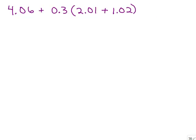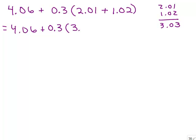Here's our next problem. Again, we need to use order of operations. The first thing is to add what's inside parentheses: 2.01 and 1.02, which gives us 3.03. Now we've got to be careful here. A common mistake is thinking you can just add 4.06 plus 0.3, but that is not the case. This is multiplication — 0.3 times 3.03 — so we need to multiply that before we do any addition.